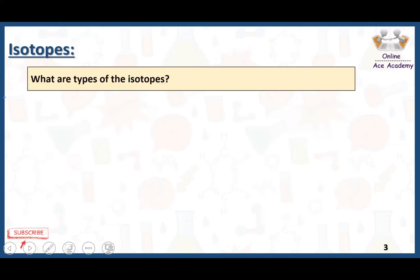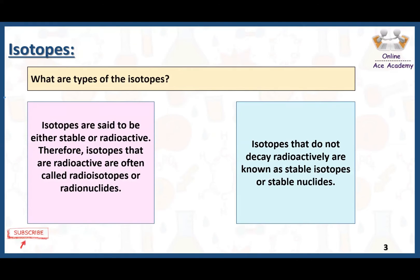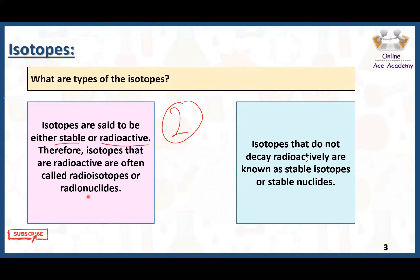Now here are some types of isotopes. Isotopes are said to be either stable or radioactive, so there are two types. Isotopes that are radioactive are often called radioisotopes. On the other hand, isotopes that do not decay radioactively are known as stable isotopes, or stable nuclei.